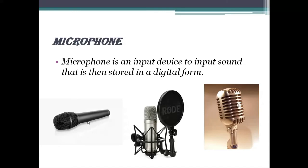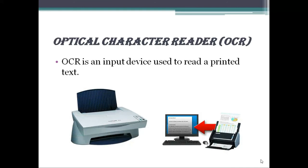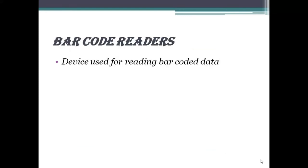Next we have Optical Character Reader. OCR is an input device used to read printed text. OCR scans the text optically, character by character, and converts them into machine readable code — that is zeros and ones, binary data — and then stores the text in the system memory. That is the functionality of OCR.